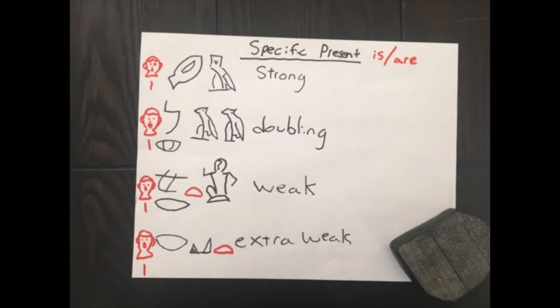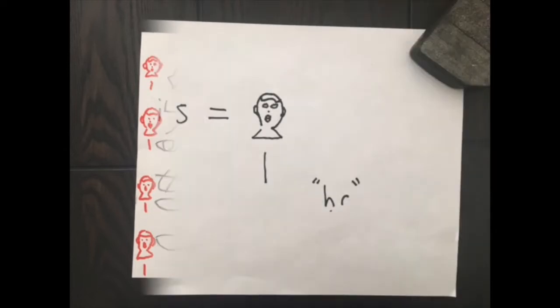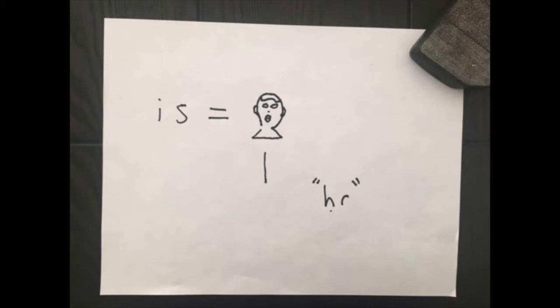As a quick review of where we've been, last week we did the specific present, which is the is—someone is hearing, is seeing. And we talked about how you add the her with a stroke line to the front of the verb, and it becomes the word is.